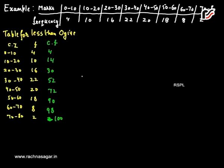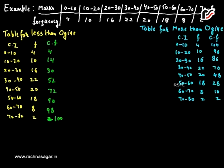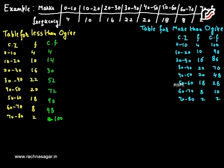Now we will find the more than ogive table. Cumulative frequencies for the more than ogive: 100 is the frequency more than 0, 96 is more than 10, 86 is more than 20. The total sum of all frequencies is 100. 100 minus 4 is 96, 96 minus 10 is 86, 86 minus 16 is 70, 70 minus 22 is 48, 48 minus 20 is 28, 28 minus 18 is 10, and 10 minus 8 is 2. So 2 is the frequency more than 70.